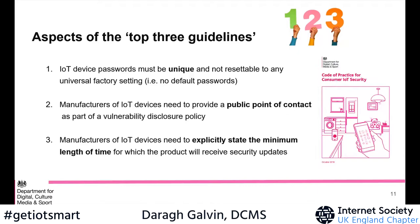Guideline three — and this has been the more controversial of the three throughout the consultation process — is about manufacturers explicitly stating the minimum length of time for which the product will receive security updates. This is all about being transparent with the consumer. If a consumer buys a product and doesn't know it will only receive security updates for six or twelve months, after that period the device could be vulnerable and the consumer will be none the wiser. We just want the manufacturer to be upfront and say this is how long the product will receive security updates.